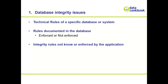Database integrity issues involve technical rules of a specific database or system — foreign key relationships, data typing, and similar constraints. A classic example is Oracle PeopleSoft ERP, where foreign key relationships and certain constraints aren't stored at the database level but at the application level. So if you're looking at the database to figure out what's going on, you won't necessarily see many quality constraints. To understand them, you have to understand the data entry points, which is where most of those things are enforced.